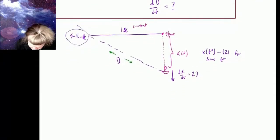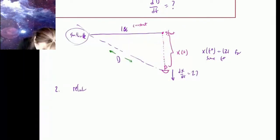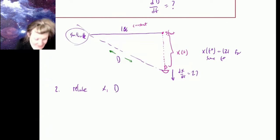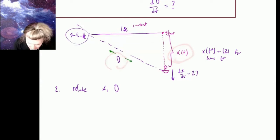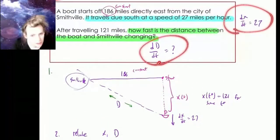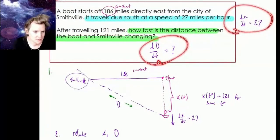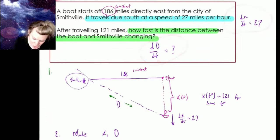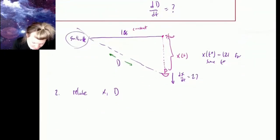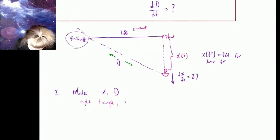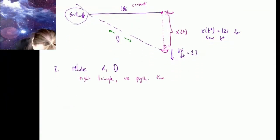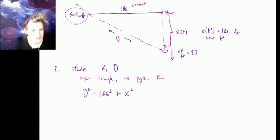That was step one: draw a picture. Step two is relate. What am I going to relate? I'm going to relate x and d, because those are labeled quantities and those are the rates of change that appear in my original problem. What I've got is a right triangle, so we're going to use the Pythagorean theorem: d² equals 186² plus x². That's my relationship.